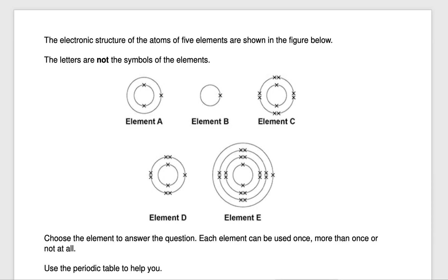Hi everyone and welcome to our video on some exam questions related to atomic structure and the periodic table. Our first exam question states the electronic structure of the atoms of five elements are shown in the figure below. The letters are not the symbols of the elements. Choose the elements to answer the question. Each element can be used once, more than once or not at all. Use the periodic table to help you.